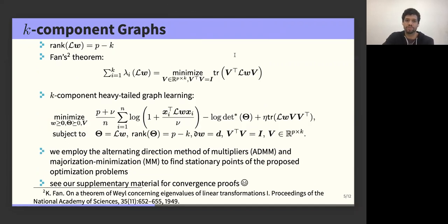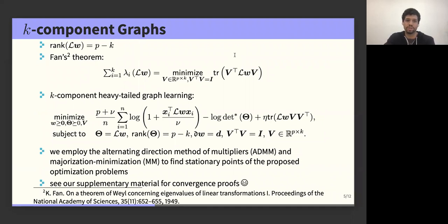We extend our formulation to a wider class of graphs — for example, k-component graphs — by leveraging the fact that the rank of the Laplacian matrix is directly related to the number of components of the graph. Specifically, the rank of the Laplacian is equal to p minus k, where k is the number of components. However, introducing this constraint directly into the optimization problem would be complicated, as it is both non-convex and non-differentiable. Instead, we rely on Ky Fan's theorem, which states that the sum of the first k eigenvalues of a PSD matrix equals the optimal value of a related optimization problem, where the optimal v consists of the k eigenvectors of the Laplacian associated with the smallest k eigenvalues.